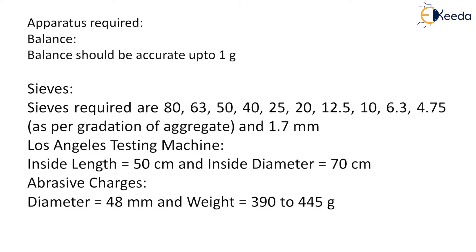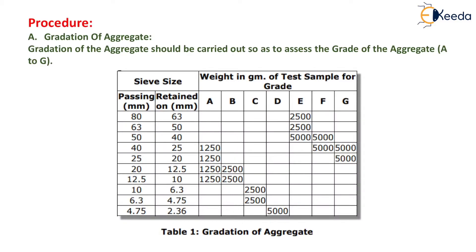Apparatus required: a balance accurate to 1 gram. Sieves required are 80 mm, 63 mm, 50 mm, 40 mm, 25 mm, 20 mm, 12.5 mm, 10 mm, 6.3 mm, 4.75 mm as per gradation of aggregate, and 1.70 mm. The Los Angeles testing machine has an inside length of 50 cm and inside diameter of 70 cm. The abrasive charges are steel balls with diameter 48 mm and weight 390 to 445 grams.